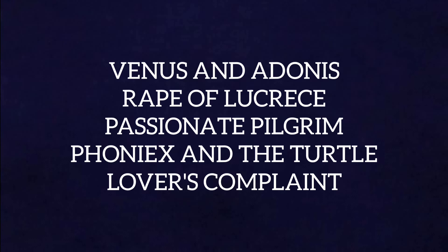The Passionate Pilgrim is a collection of poems attributed to Shakespeare; however, only a few of these poems are today accepted as Shakespeare's. The Phoenix and the Turtle is an allegorical poem in which birds die and become one in their love for each other. A Lover's Complaint narrates the story of a young woman who laments over her seduction by a persuasive, womanizing young man who eventually leaves her and breaks her heart.